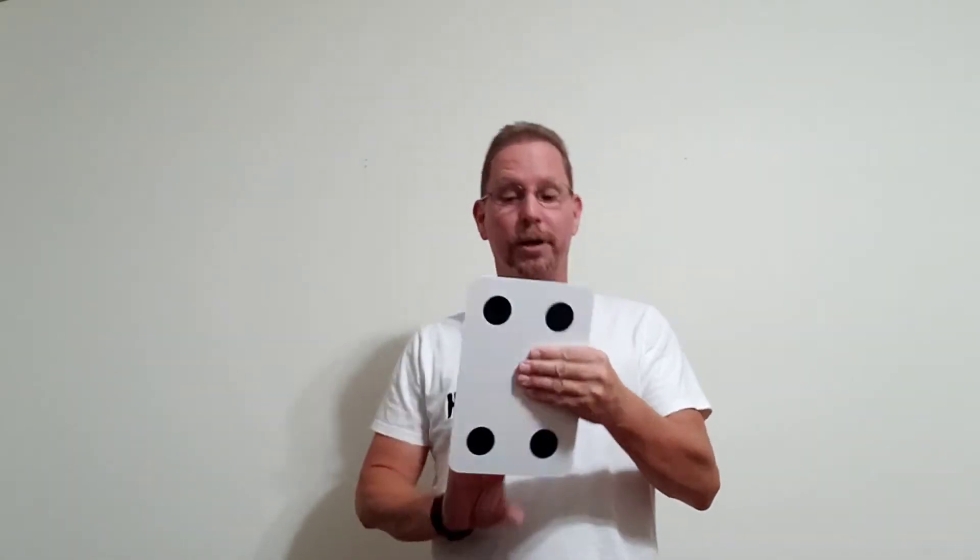You're going to put one dot right there in the center on one side. On the next side, put four dots, one in each corner. Then for the next side, put three dots, and for the last side, put six dots.